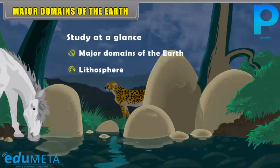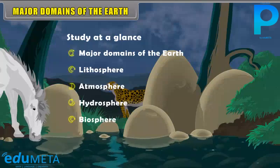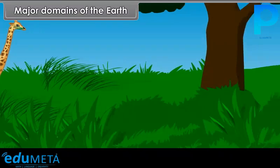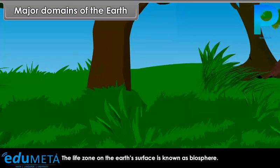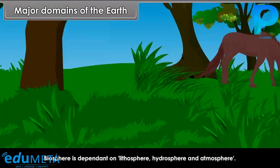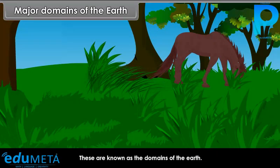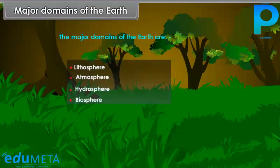The major domains of the Earth are Lithosphere, Atmosphere, Hydrosphere, and Biosphere. The life zone on the Earth's surface is known as the Biosphere. Biosphere is dependent on the Lithosphere, Hydrosphere, and Atmosphere. These are known as the domains of the Earth.